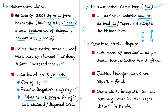Maharashtra expressed willingness to transfer 260 predominantly Kannada-speaking villages to Karnataka, provided Karnataka accepted Maharashtra's demand for 814 villages and three urban settlements. However, this offer was rejected by Karnataka. Between the 1960s and 1980s, chief ministers of both states met several times, but the issue could not be resolved.